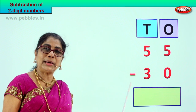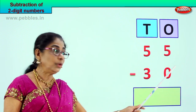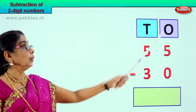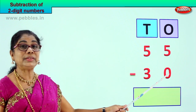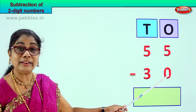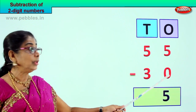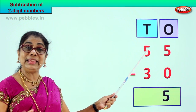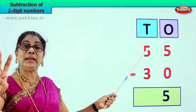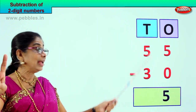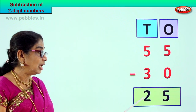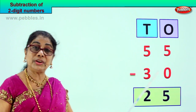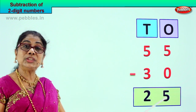Fifty-five minus thirty. Five tens, five ones minus three tens, zero ones. Go to the ones place: five take away zero is five itself. Now the tens: five take away three — one, two, three — your answer is two. Your answer is twenty-five. Fifty-five take away thirty gives you the answer twenty-five. Did you enjoy doing two-digit subtraction?